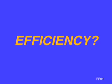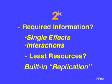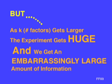We have just learned how efficient two-level balanced factorial designs are, but do we really have efficiency? The two-to-the-k gives us the required information — single effects and the interactions — and they have built-in replication to boot. But as the number of factors increases, the number of runs increases, and even worse, we get too much information. An embarrassingly large amount of information. Did you ever think you could get too much information?